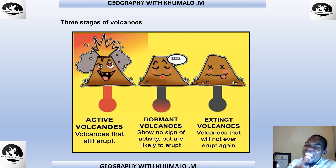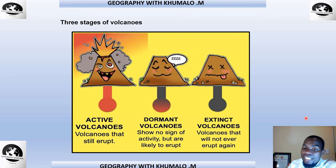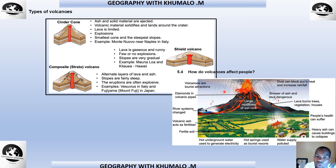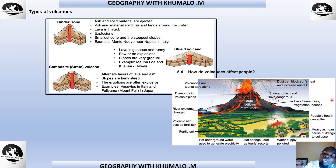The three types of volcanoes are: a cinder cone, a composite or stratovolcano, and a shield volcano. You must understand each type and its characteristics. Regarding how volcanoes affect people — positive effects include: volcanoes as tourist attractions, diamonds found in volcanic pipes, changed river systems, and volcanic ash acting as a fertile soil fertiliser. Negative effects are those that harm us. Be able to differentiate between positive and negative impacts of volcanoes.